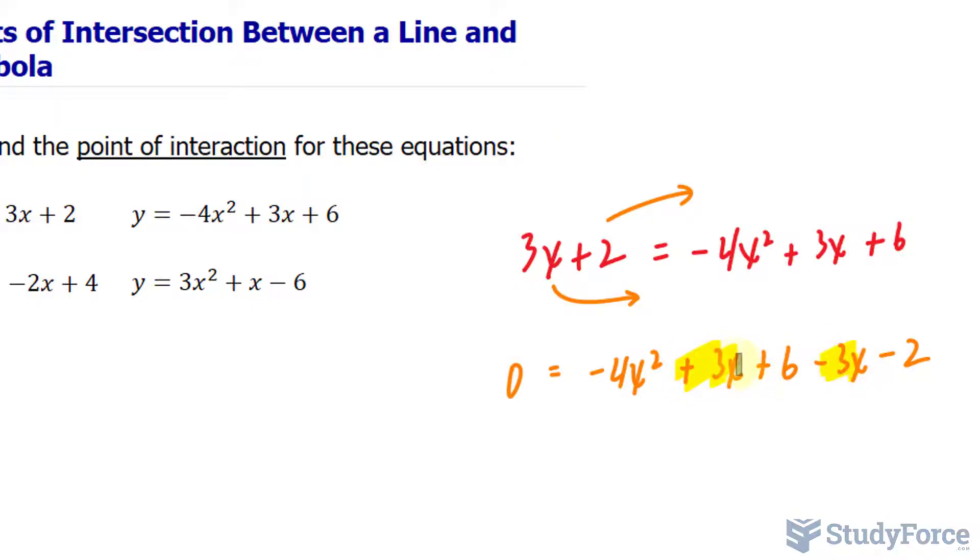So this and that will come together. Positive 3X minus 3X makes 0. Technically, we got lucky here because sometimes after combining the X terms, you don't get 0 but instead some other number.